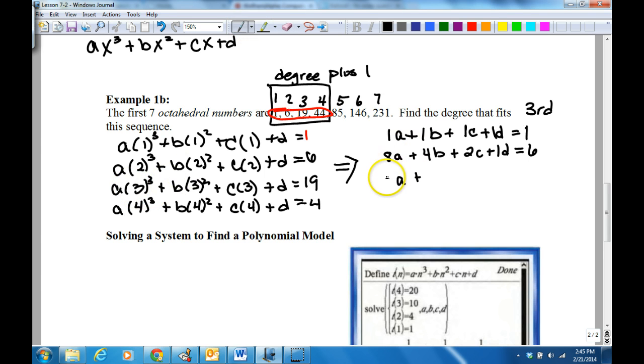What's 3 to the third? 27. So this would be 27a plus 9b plus 3c plus 1d equals 19. And then the last one is going to be 64a plus 16b plus 4c plus 1d equals 44.